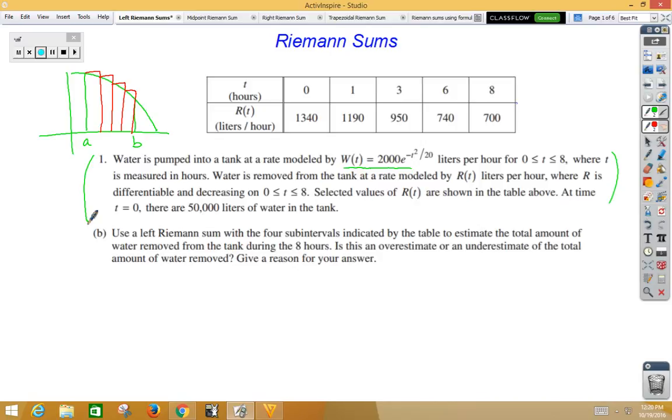It says, use a left Riemann sum with four sub-intervals, that means N is 4, indicated by the table to estimate the total amount of water removed from the tank during the eight hours. So, that means from zero to eight. So, let's go ahead and start with a left Riemann sum.